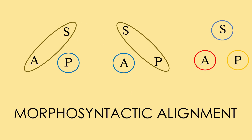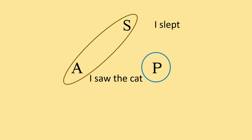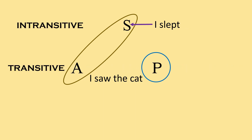Now we're going to look at morphosyntactic alignment more fully, and these will be a little more complicated. Look at sentences like 'I slept' versus 'I saw the cat.' One is intransitive, one is transitive. The 'I' in 'I slept' is the subject — I am doing something. Similarly, in 'I saw the cat,' 'I' is the agent, the one doing something to the cat, which is the patient — the receiver of the action.